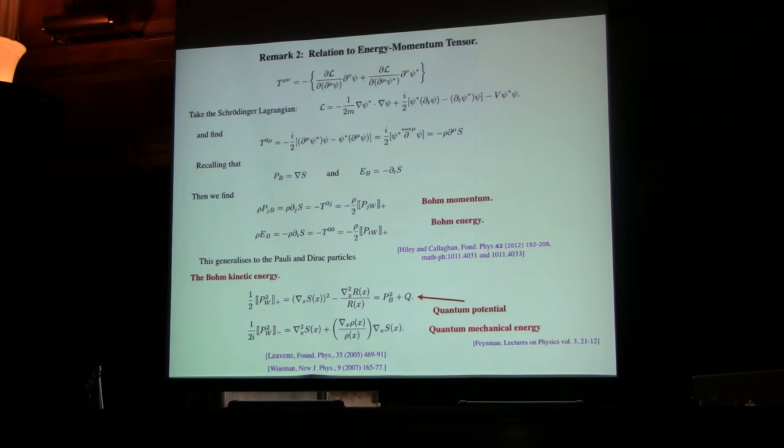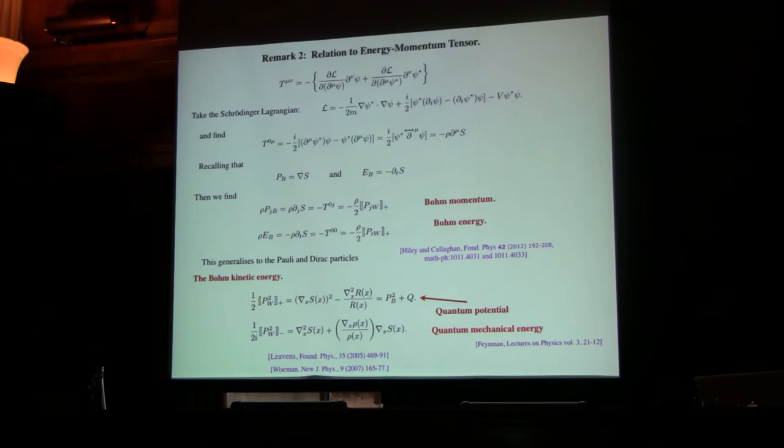Oh, and there's that quantum potential which causes a lot of discussion in the literature. It's there, it's not there, it's a lot of nonsense. And once again, if you look at Feynman's lecture notes in Physics Volume 3, you will actually find that expression, and he calls it the quantum mechanical energy, and then moves on and that's the last thing he wants to do.